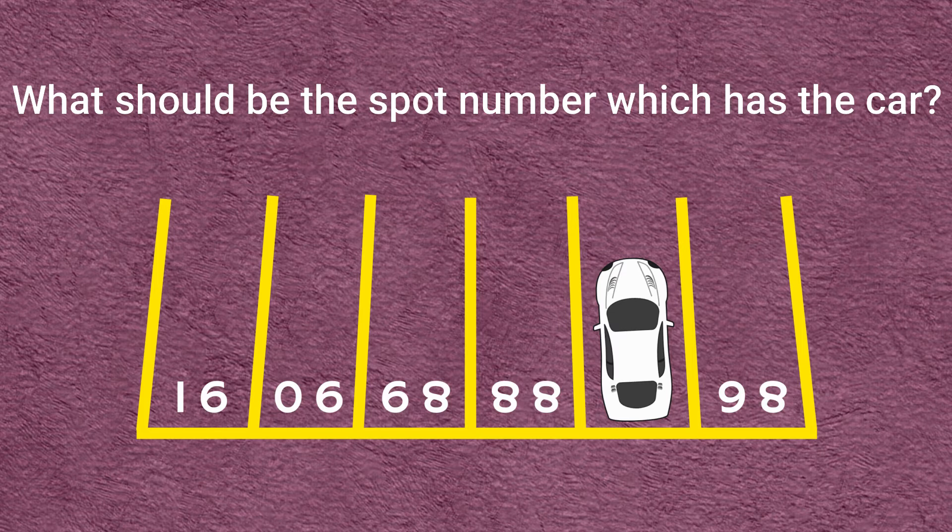Now I'm going to tell you how I found this answer. There is one important thing to notice about this problem. The spot number should be visible to the car that's going to park here. That's the main thing.